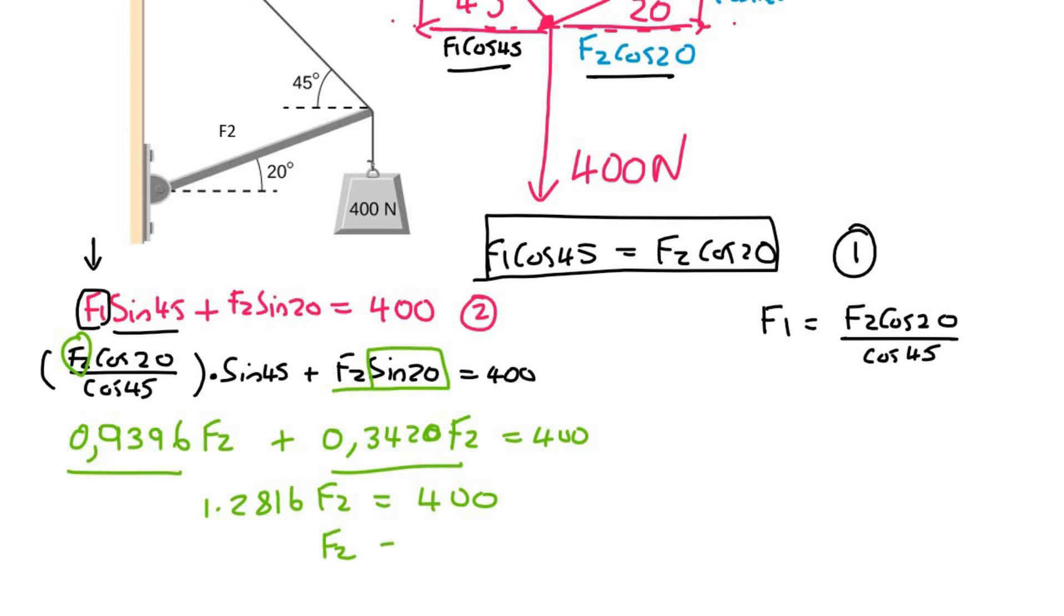You can then get F2 alone by dividing by 1.2816, and that's going to give you 312.1 newtons. Now I can round off to two decimals, which will actually be one point, it will actually be 0.11.